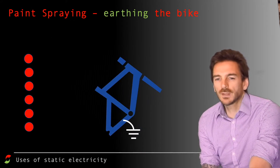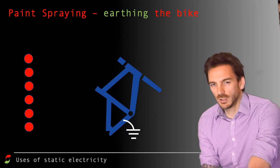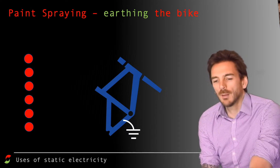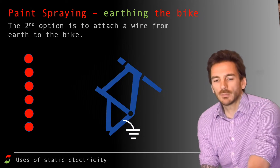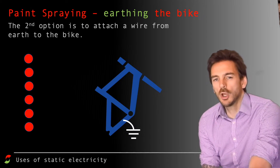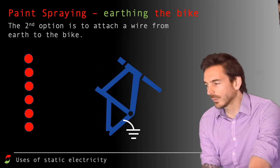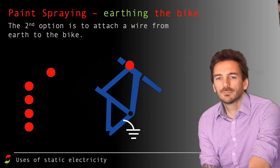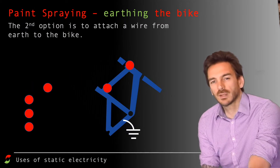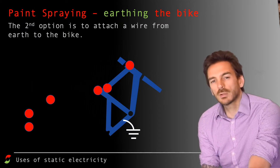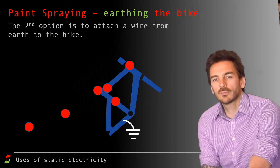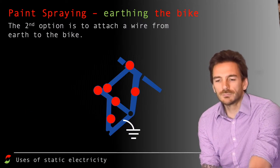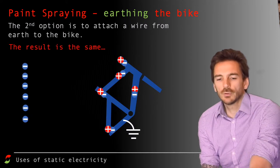Instead of giving the bike frame an opposite charge, you could earth the bike frame - that's what the earthing symbol at the bottom means. The outcome is exactly the same: you either give the bike frame an opposite charge to the paint or you earth it, and the result is the same.